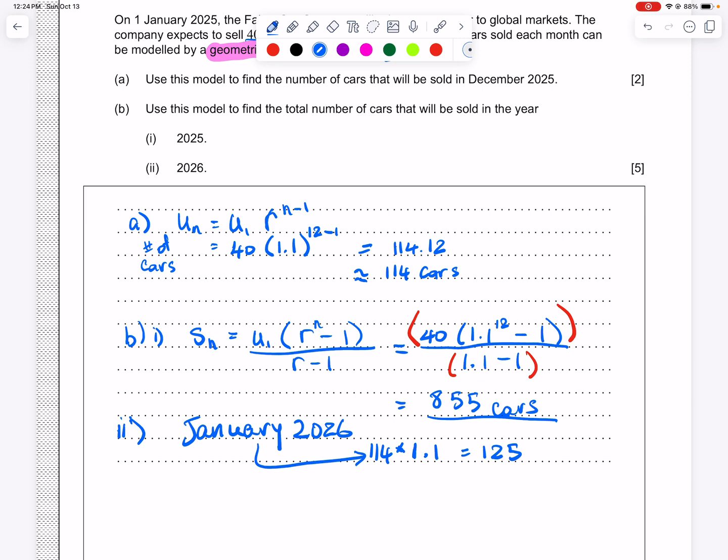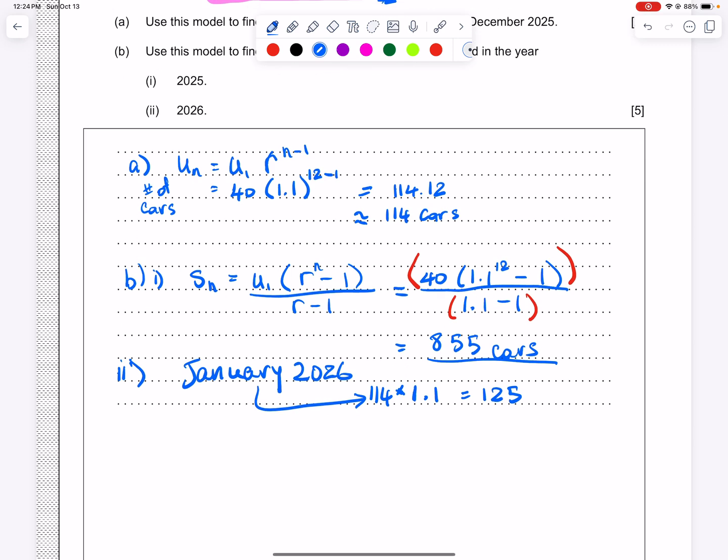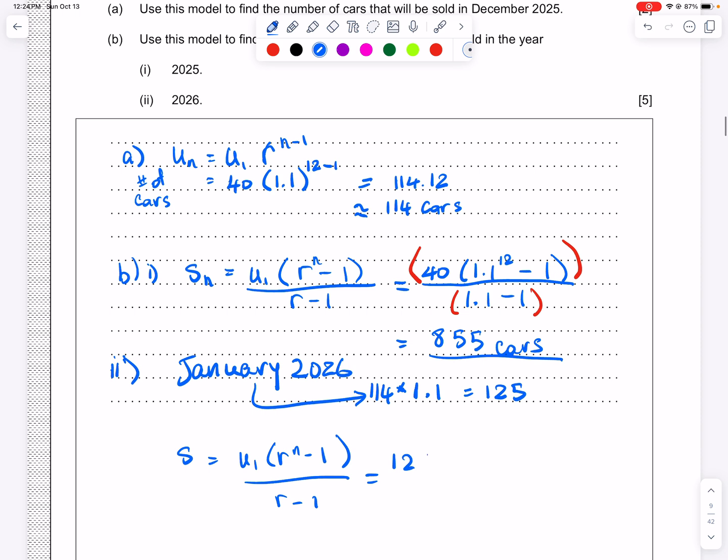Once we have our first term for 2026, everything is just like the last question we did. So we're doing the sum for 2026. And we use the same formula, U1, R to the N minus 1 over R minus 1. And so now U1 is not 40 anymore. Since we're now in 2026, there are more cars being sold. There are 125 being sold in January. So 125 and everything else is the same.